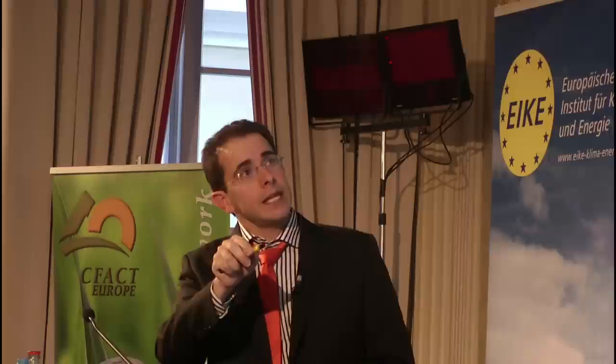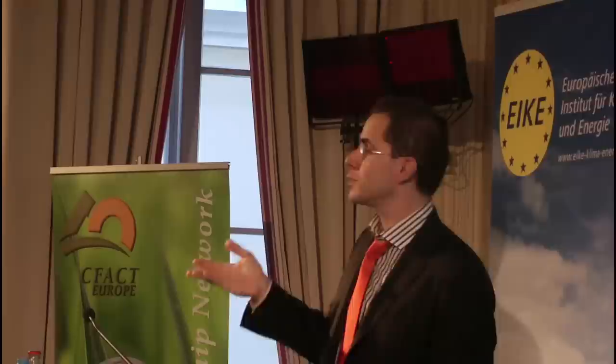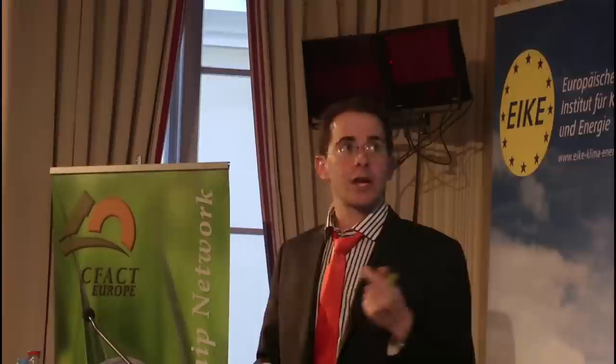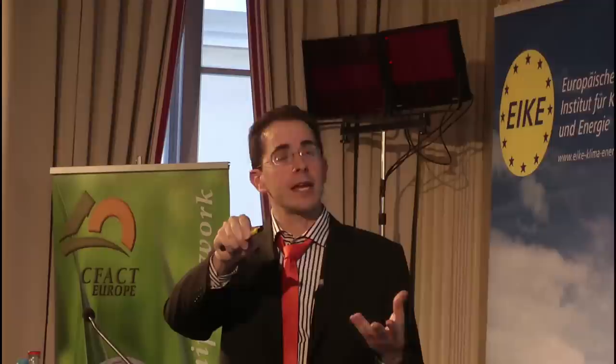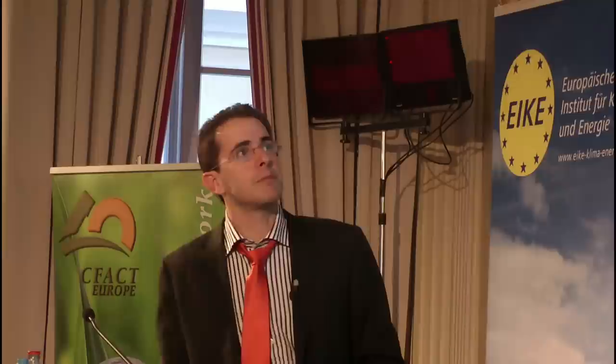The bottom part of the graph is a temperature reconstruction — a proxy of the temperature in the Indian Ocean. Oxygen-18 is heavier than oxygen-16, so water with oxygen-18 is heavier, and the evaporation rate from the oceans is different for the two types, and it's temperature dependent. So the oxygen that falls in Oman and forms stalactites in caves mirrors the temperature of the Indian Ocean. And clearly, you see a very nice correlation between solar activity and climate in the Indian Ocean.